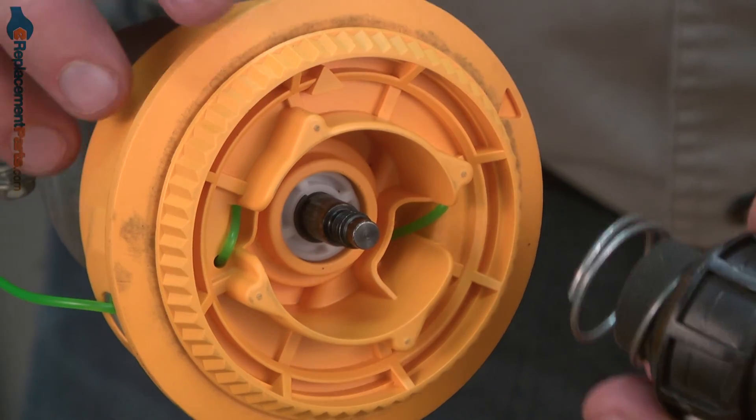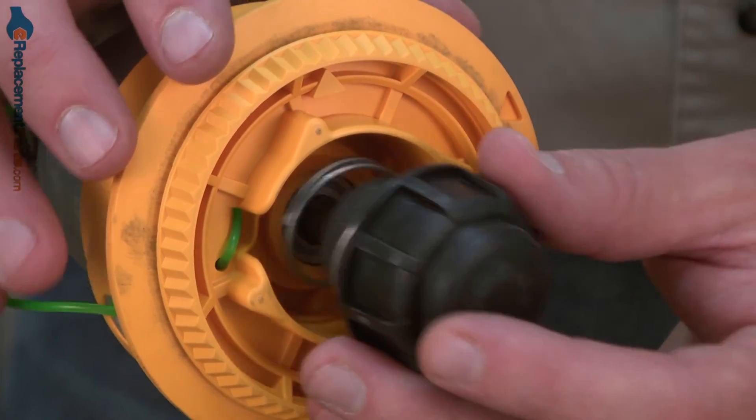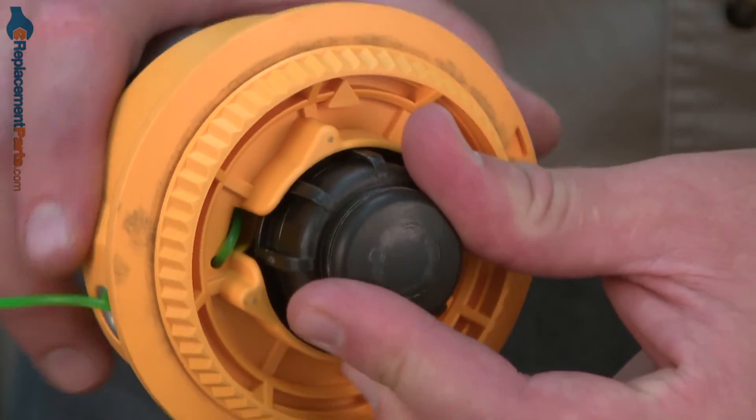And now I'll secure the spool with the bump head knob. Because of the spring on the knob, you'll need to press in as you secure it.